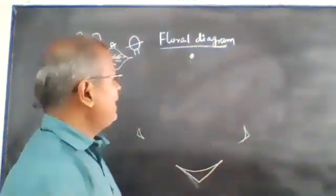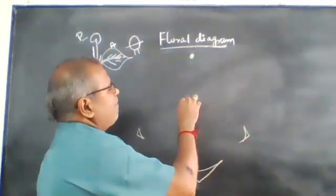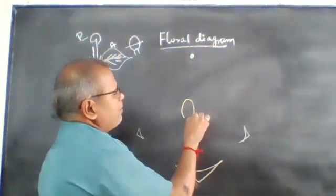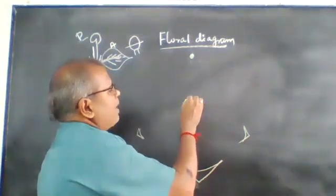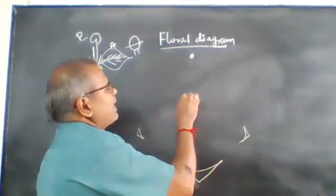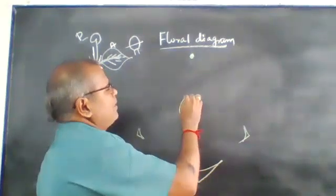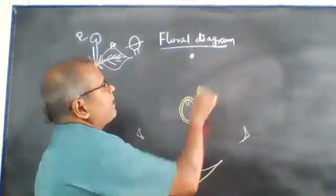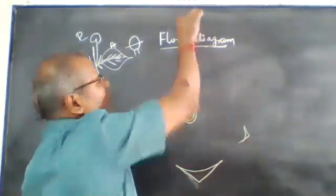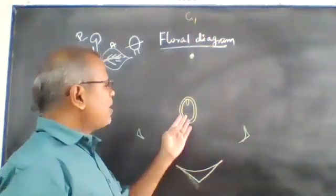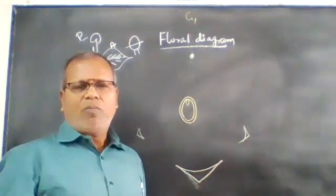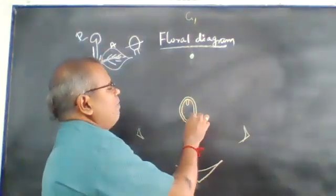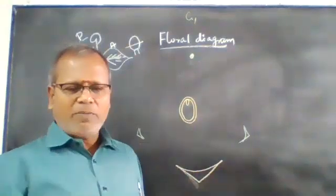In the middle, the gynoecium is drawn. It should be a marginal placentation — the ovules are connected at the margin.